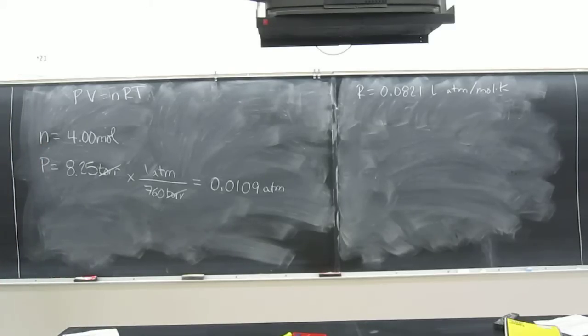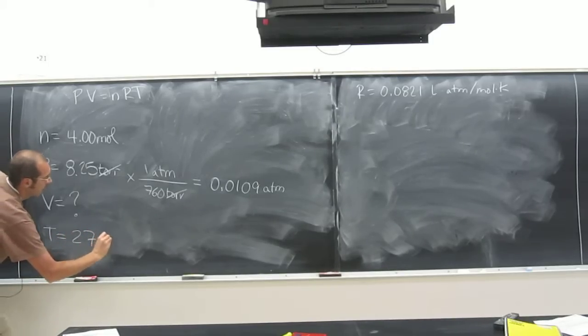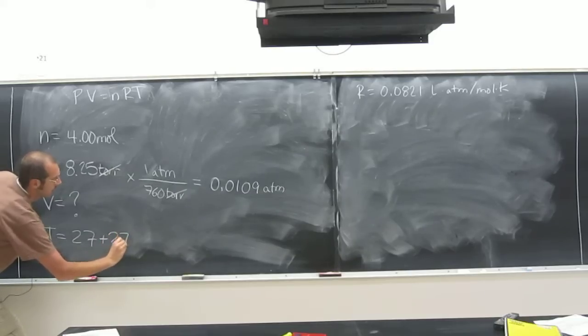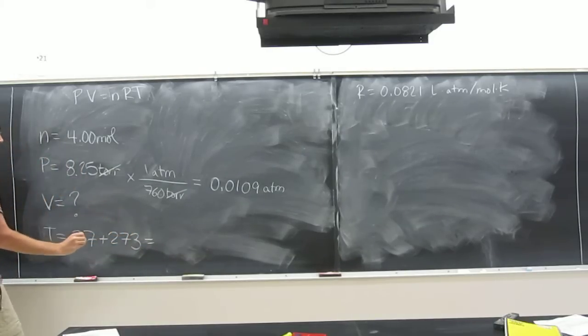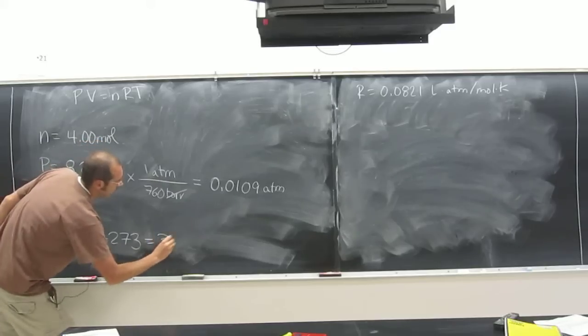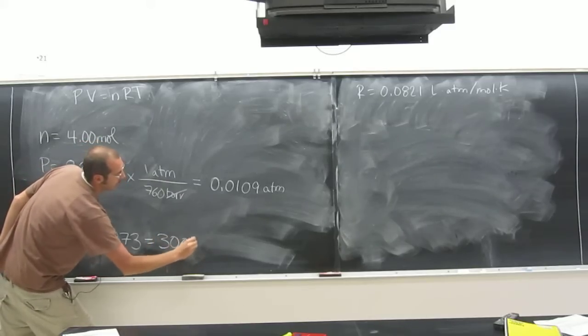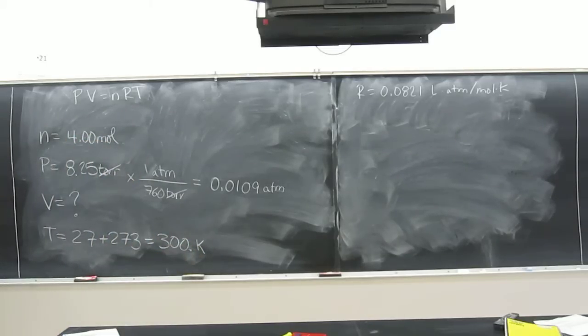Do we know V? No, that's what we're looking for. And then we must know T, right? Or we wouldn't be able to do this problem. What is that? 27 plus 273, which equals 300. So they're going to want you to put a decimal place there. Make sure you don't do this to one sig fig. I think you're going to want to do this to three sig figs.